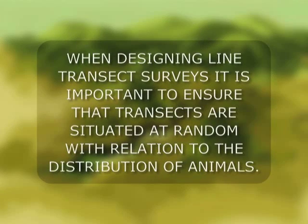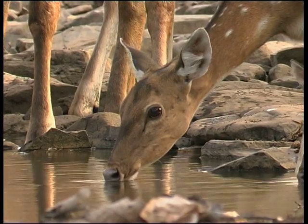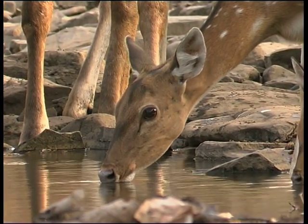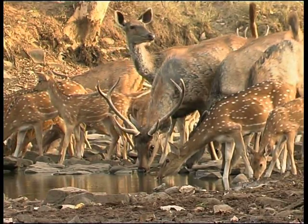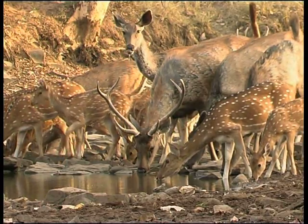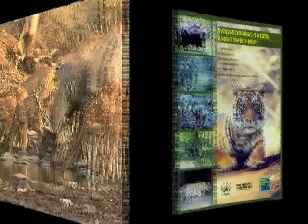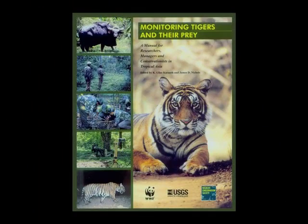When designing line transect surveys, it is important to ensure that transects are situated at random with relation to the distribution of animals. If transects are deliberately situated along water holes or salt licks, we will end up with an overestimate. For more information on this, please refer to chapters 9 and 10 of the manual.